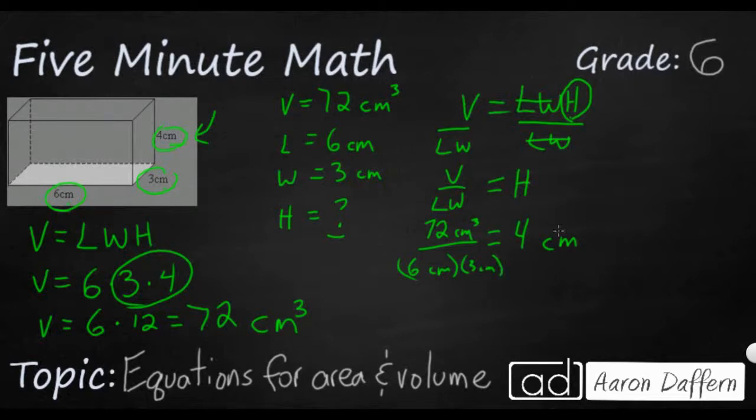And then our length times width, that's going to be 6 cm times 3 cm. And so if we simplify that a little bit, it looks like 72 cubic centimeters divided by 18 centimeters squared is going to get us four centimeters. And that is correct. 72 divided by 18 equals four, centimeters cubed divided by centimeters squared is going to give us just centimeters. So you can use the divisibility rule of equality to try to isolate this variable.